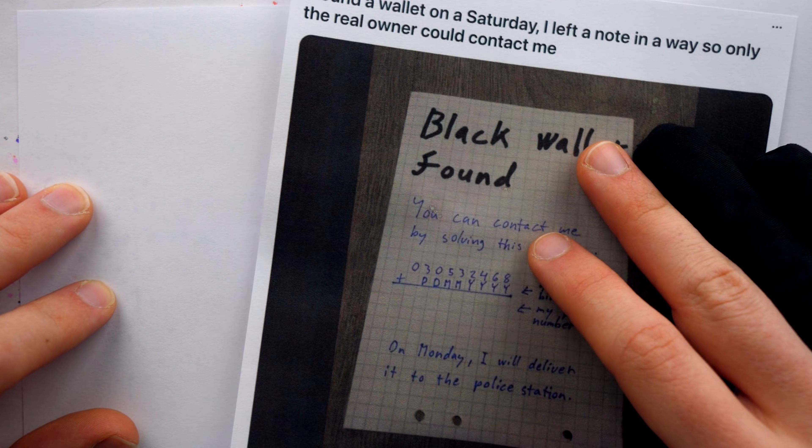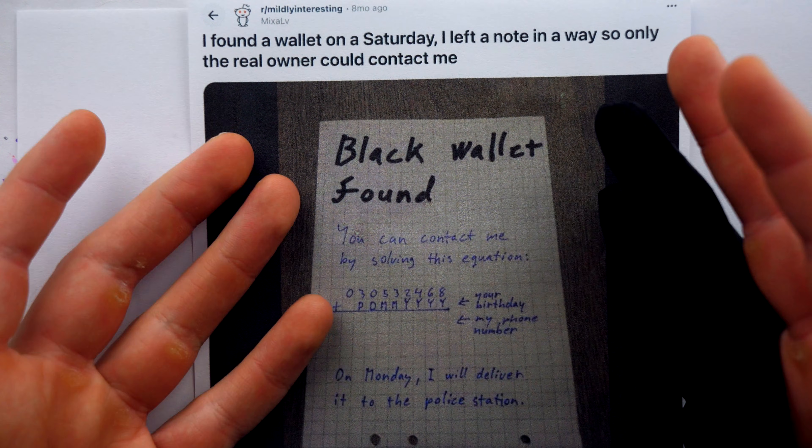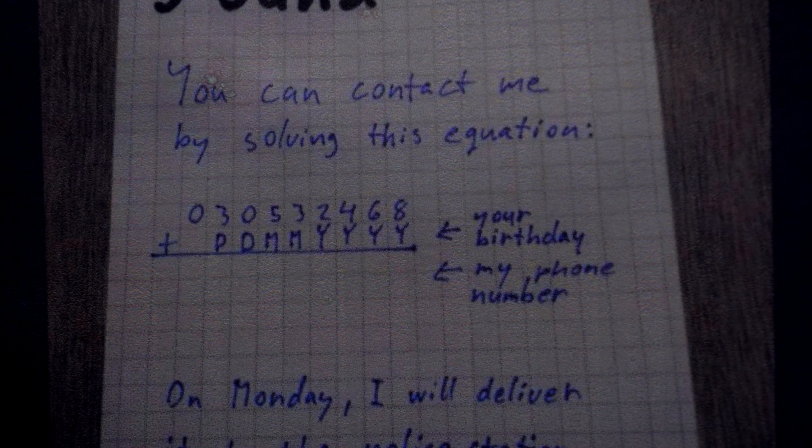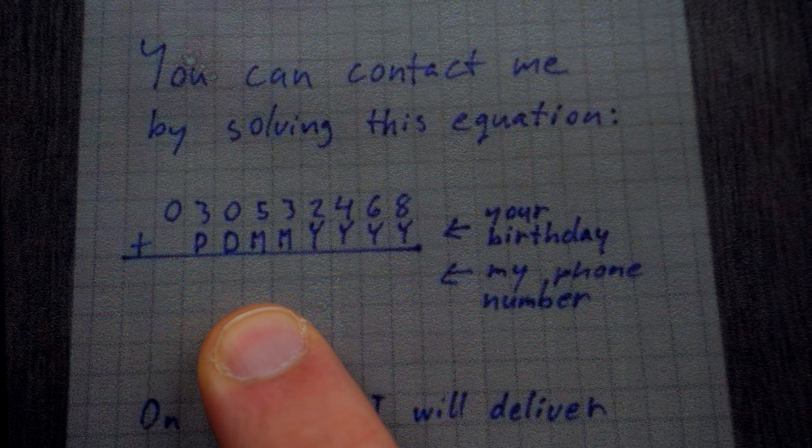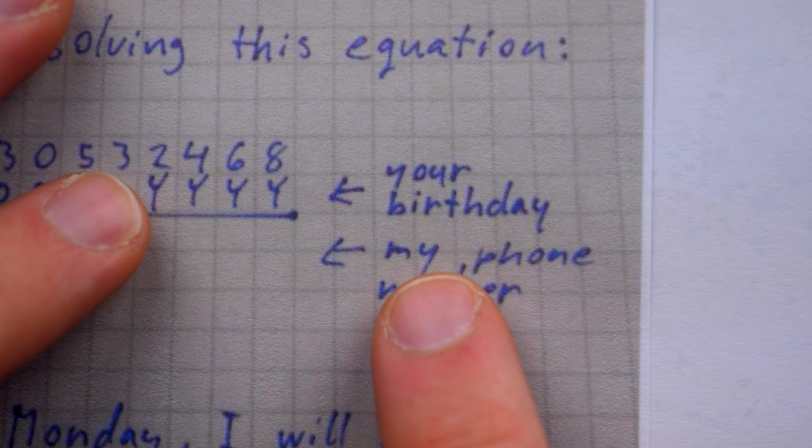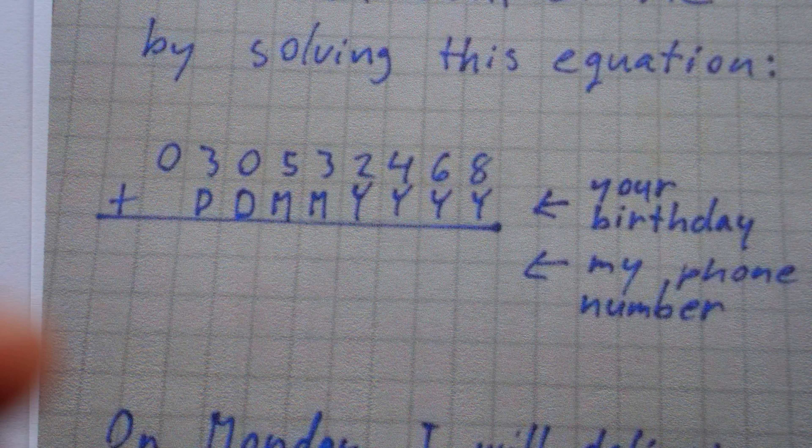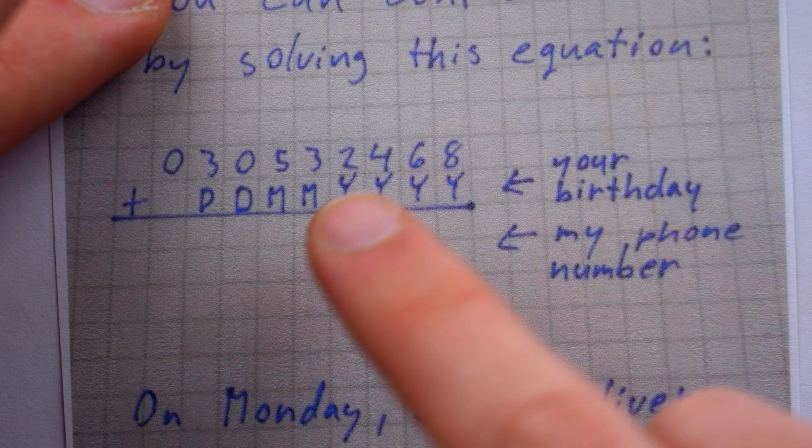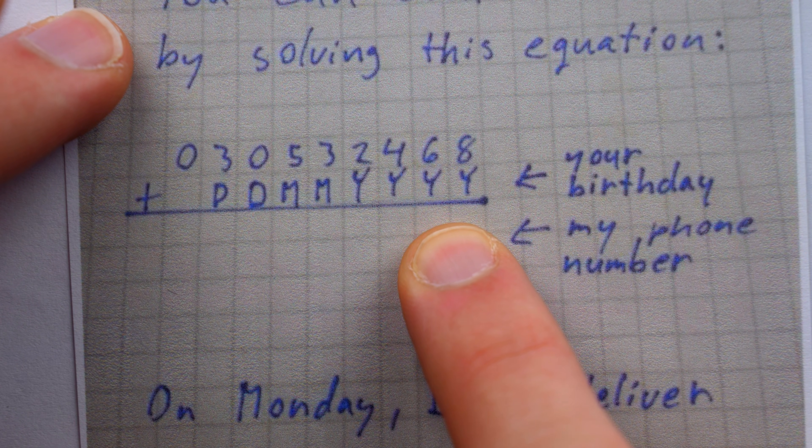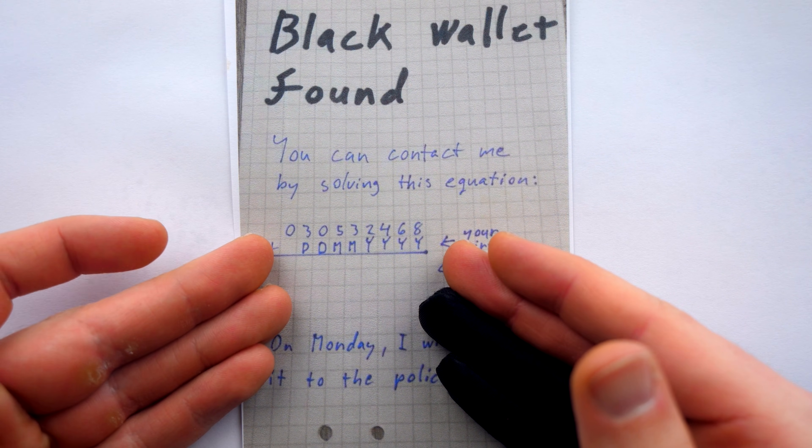Under these difficult circumstances, the OP devised a clever way to give the wallet's owner a chance to receive the wallet before Monday, if he was to find the note and use his birthday to get OP's phone number and call. The point of the math here is to keep OP's phone number secret from everybody except the wallet's owner. But of course, anybody could guess a birthday, plug it in, and try to ring up the resulting number. But what are the odds of that working? How secure is OP's encryption?